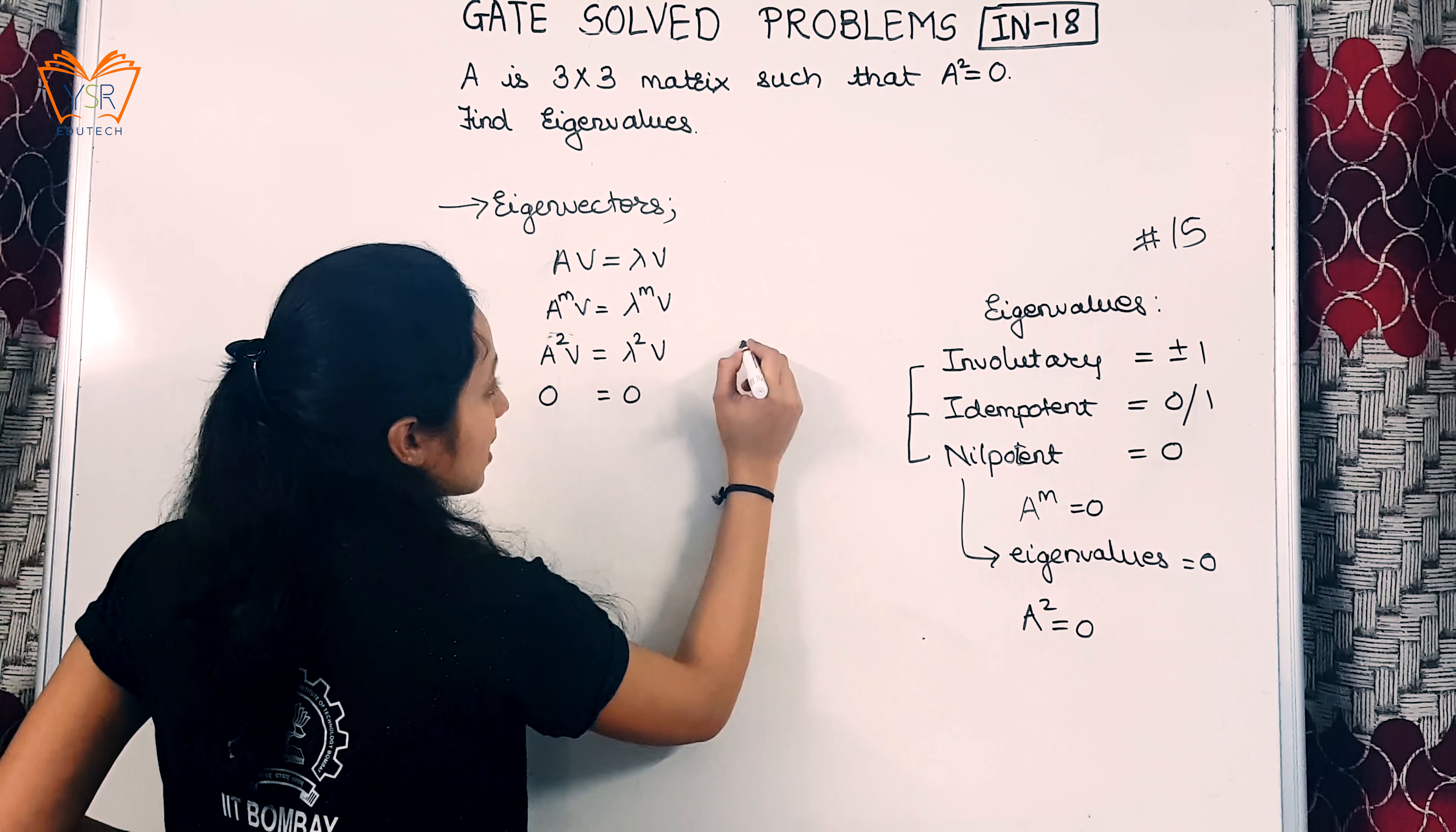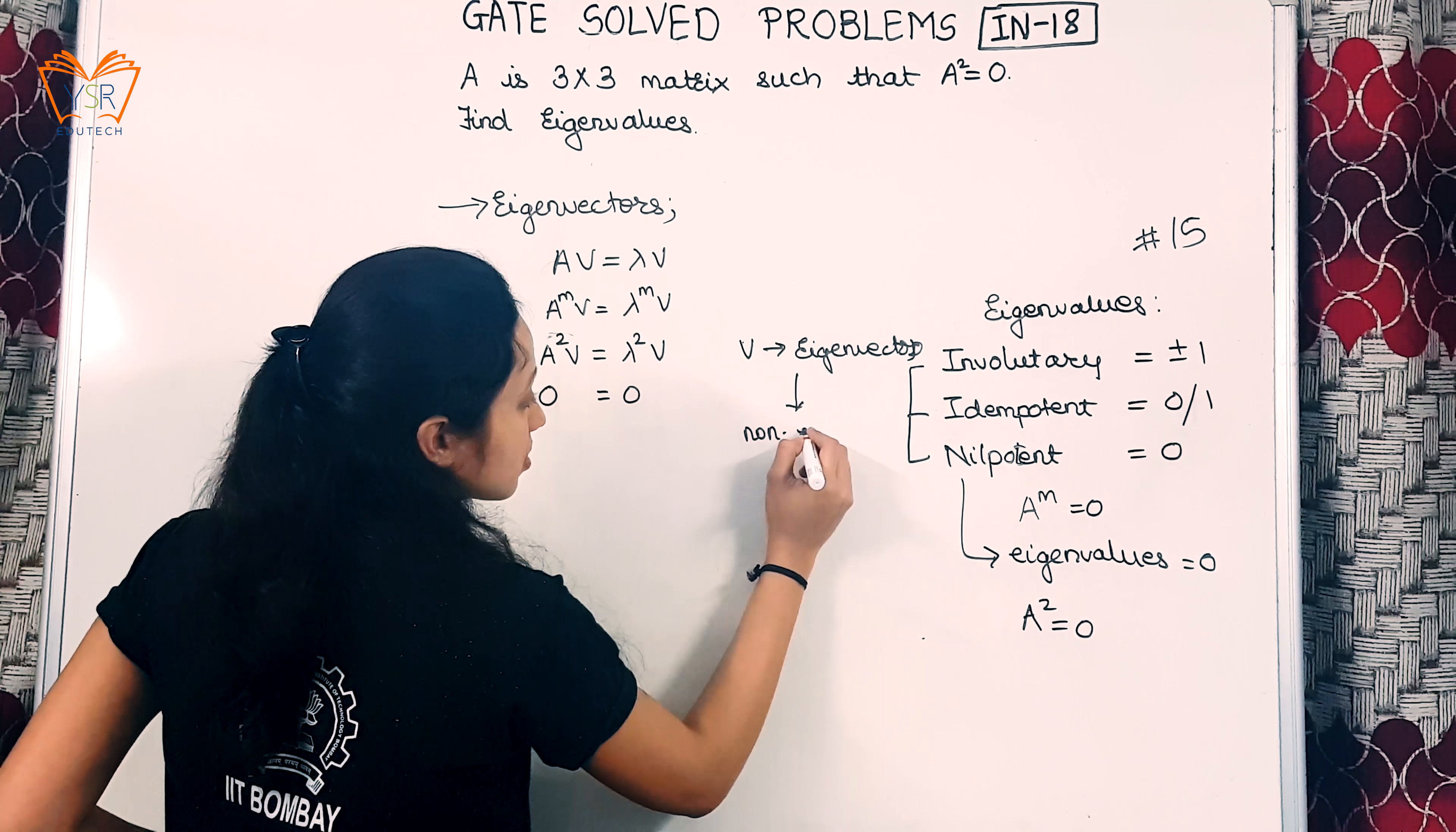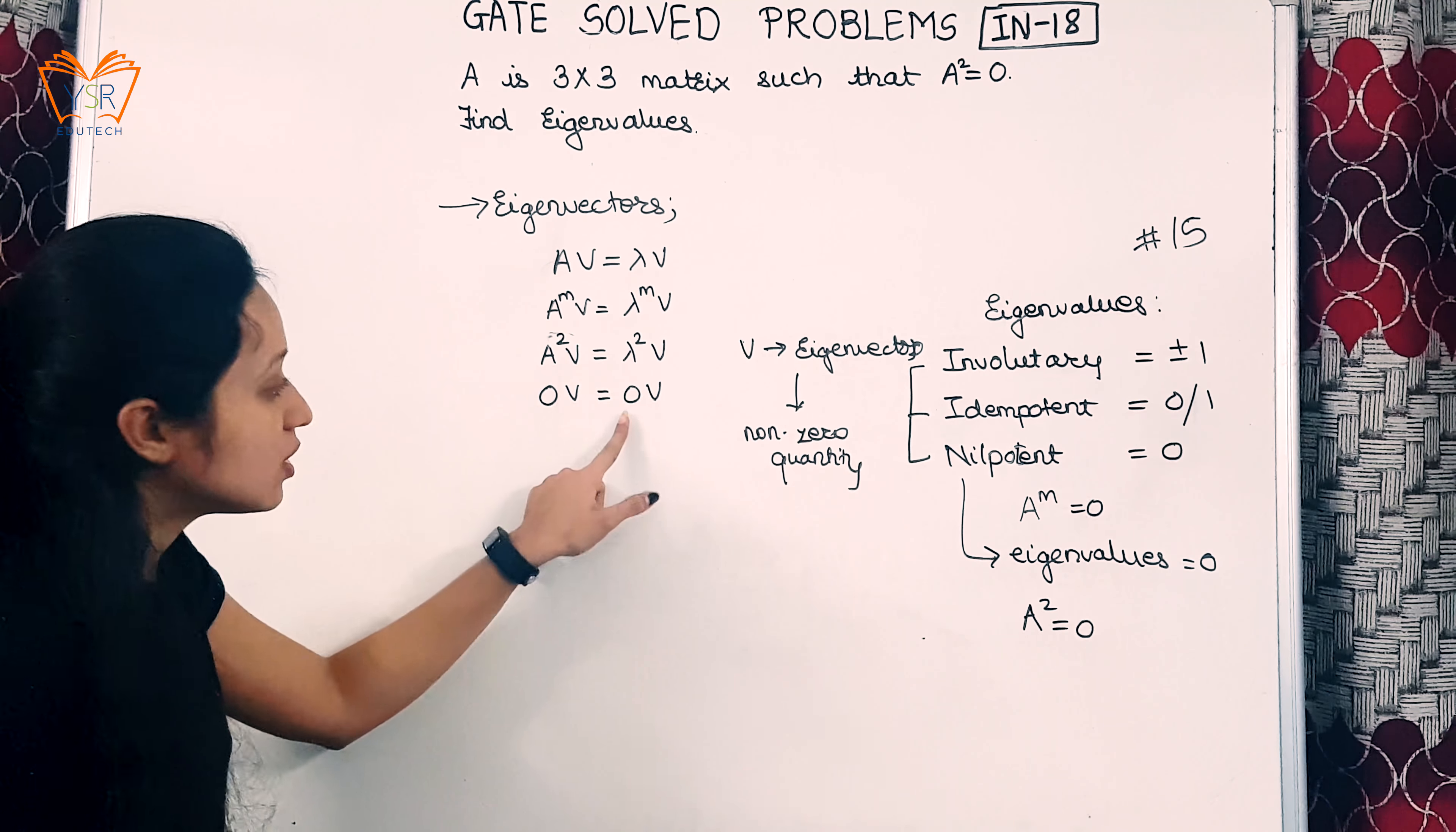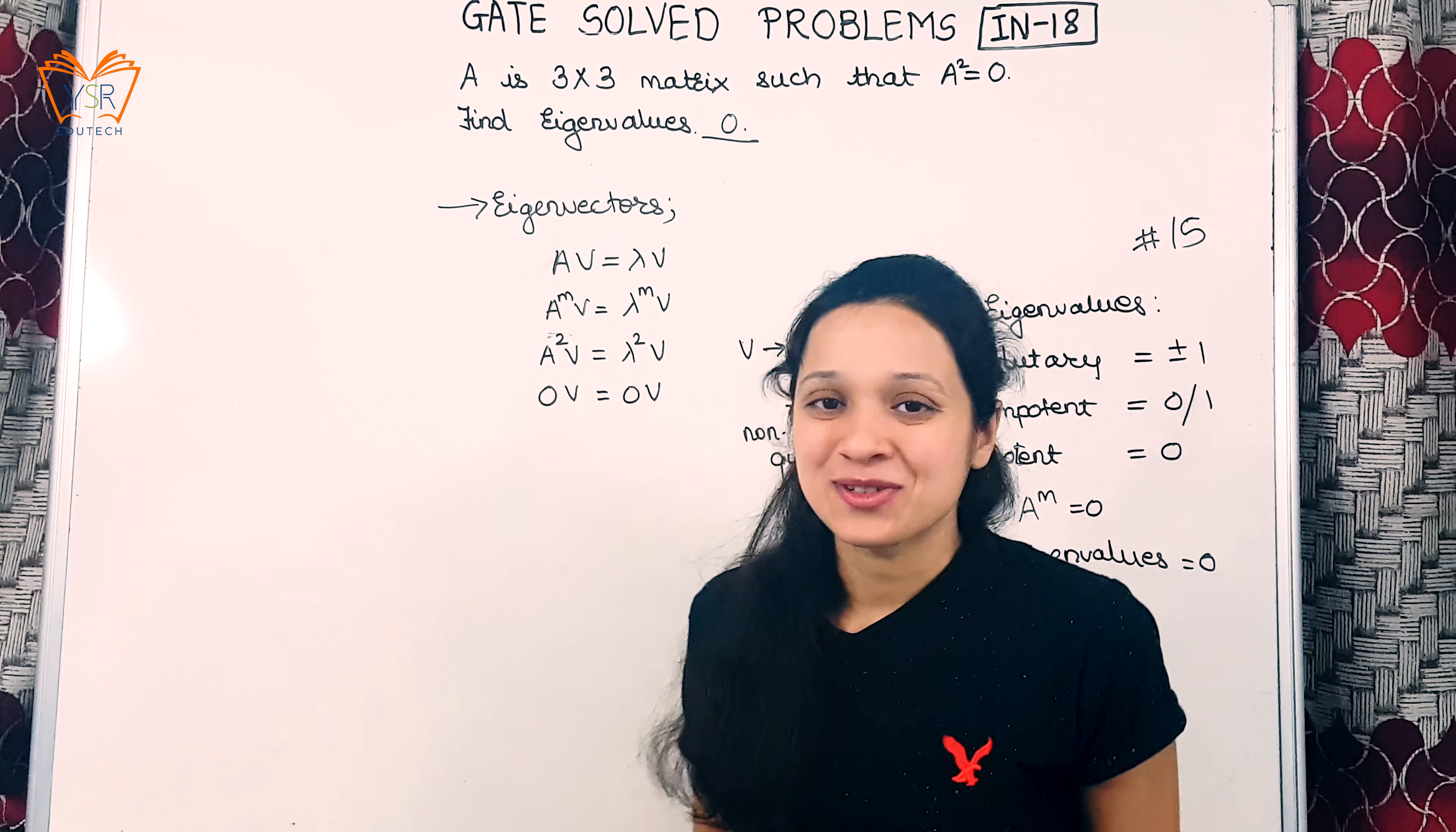Now as eigenvectors are non-zero quantities, they will remain the same. So eigenvalues will be equal to 0. Thus, for the given 3×3 matrix, the eigenvalues will be 0. Hope you understood. Thank you.